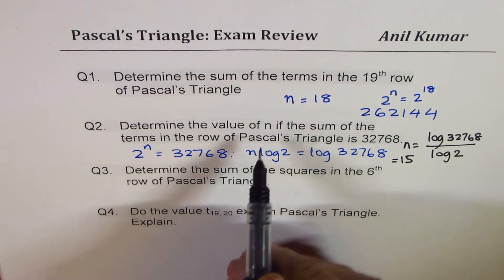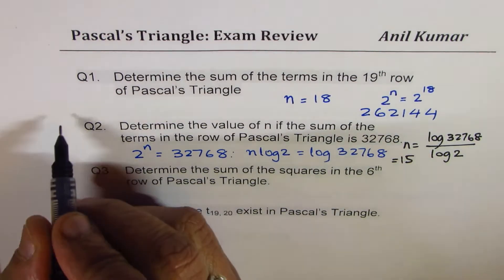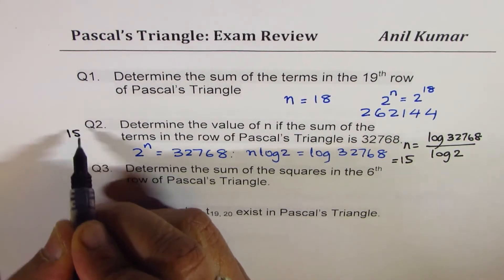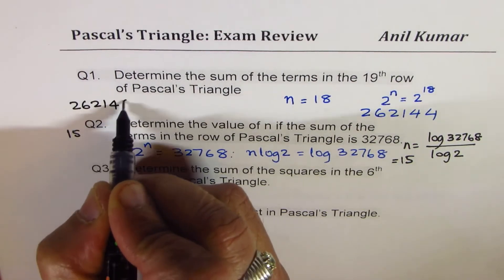So the answer here is 15. So determine the value of n. We are not asking for a row. n is 15. So the answer for question number 2 is 15. Let me write down answer for 1 is 262144.